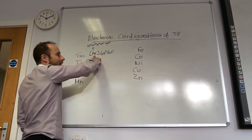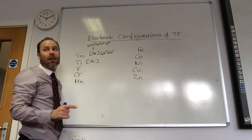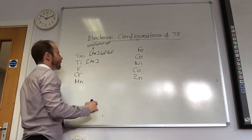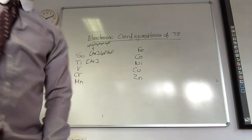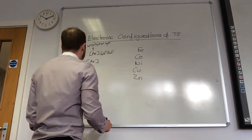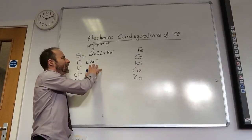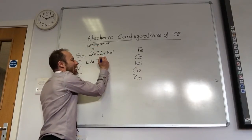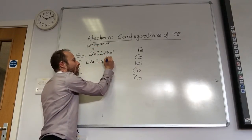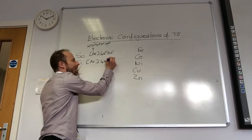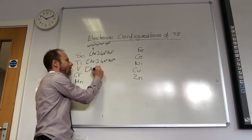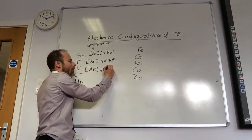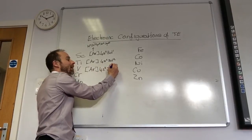Remember, you can only do noble gases. Scandium has 21 electrons — you were looking at the mass number. Titanium is going to have that but with an extra one: 4S2, 3D2. Vanadium again: argon, 4S2, 3D3.